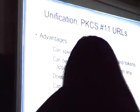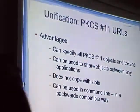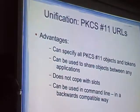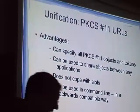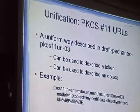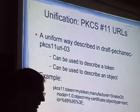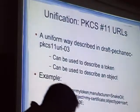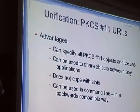What are the advantages of using URLs to identify objects? We can describe all tokens, it doesn't care about any slots, and it can be used to share between applications. If all applications decide to standardize this URL scheme, you can copy the position of your certificate — your URL — from one application to the other. A nice property is also that it can be used on the command line because they are purely text.